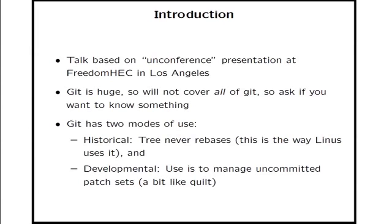The other way you can use Git is developmental, which is often the way I use Git to manage my patch tree. Basically you treat a Git branch like a set of uncommitted patches, and you use Git commands to shuffle them around, change authorship, add bits, modify comments, and the like. It's actually a very good method of using Git if you're just using it for development purposes, rather than using it as a tree to show the world.